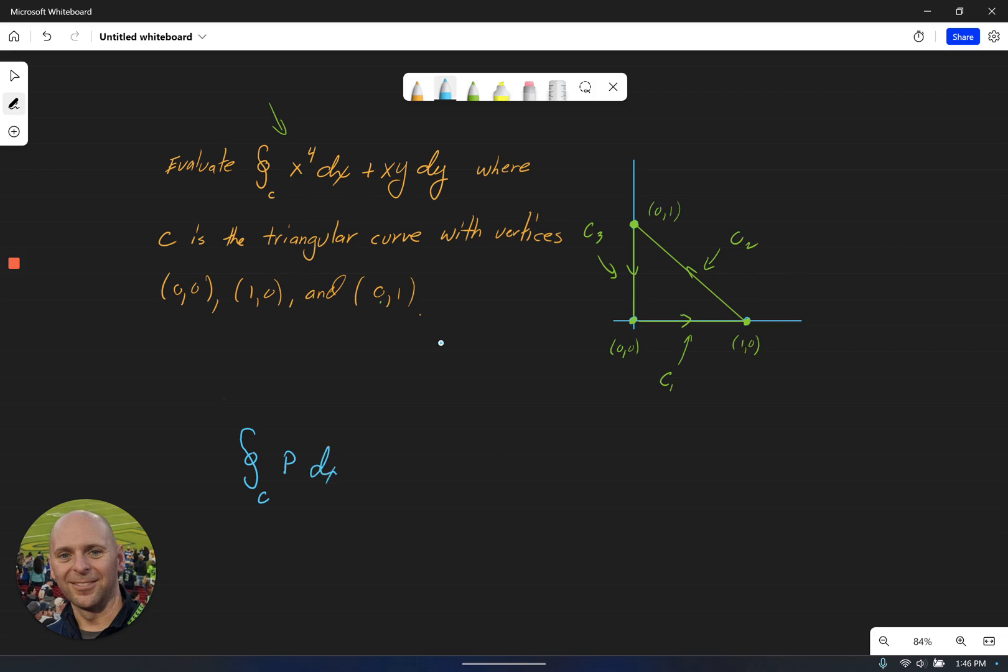So Green's theorem says the integral over the curve of P dx plus Q dy is equal to the double integral over the region D of the partial of Q with respect to x minus the partial of P with respect to y dA. Again, it's really important to understand that when we apply Green's theorem, this is only for closed curves.